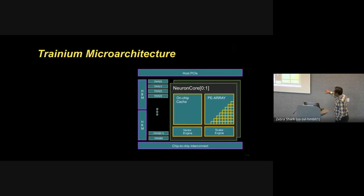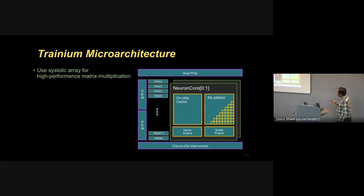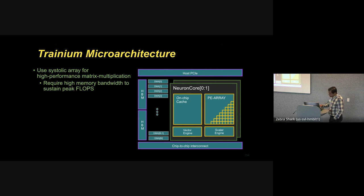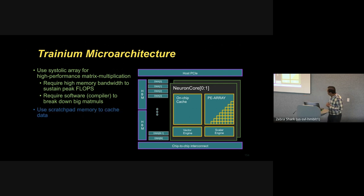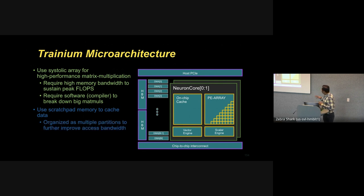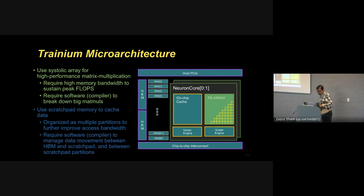Here is a schematic diagram of the Trainium microarchitecture. The core of the chip is the systolic array for matrix multiplication, which requires high memory bandwidth to sustain peak FLOPS in the matmul array. It also requires compiler support to break down large matmuls into smaller sizes that a single systolic array can handle. The systolic array is fed by a scratchpad memory used to cache data from high-bandwidth memory, organized as multiple partitions to further improve access bandwidth.